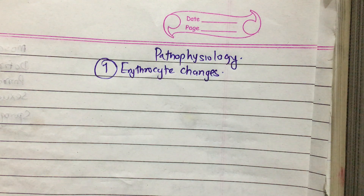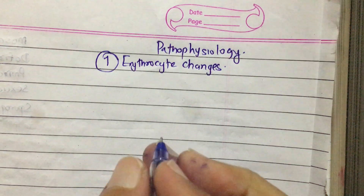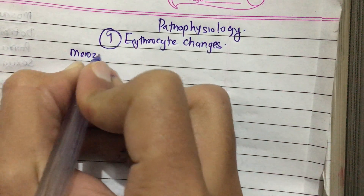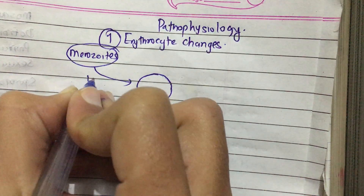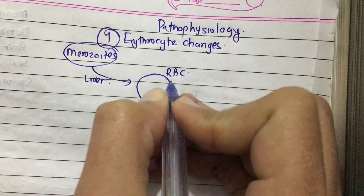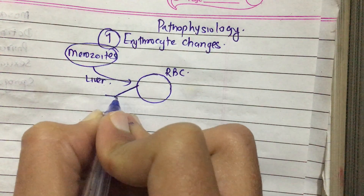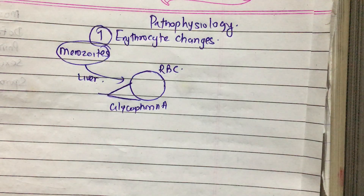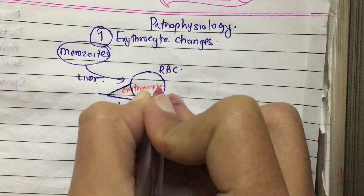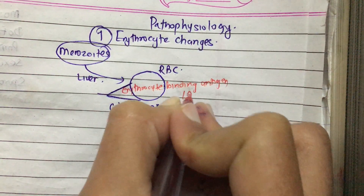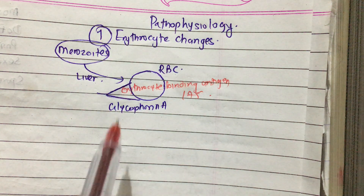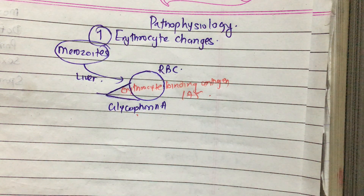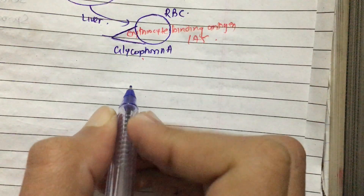Before talking about erythrocyte changes, I would like to discuss the fact that the major merozoites liberated from the liver get attached to the RBC via two receptors: one is glycophorin A, and the second is erythrocyte binding antigen 175 (EBA-175).